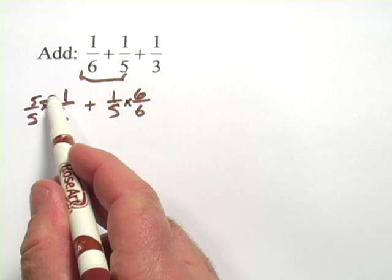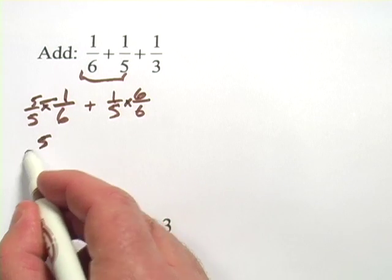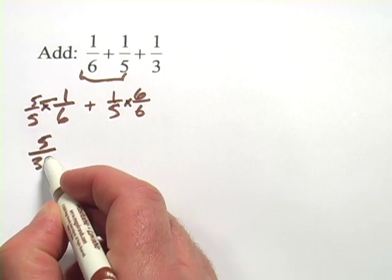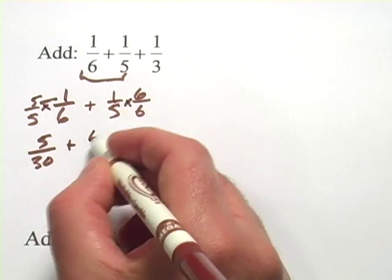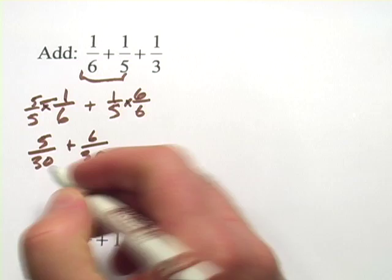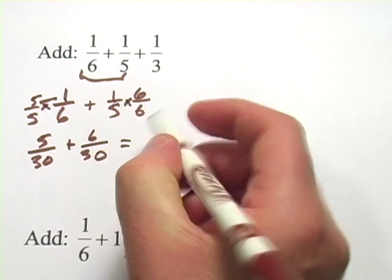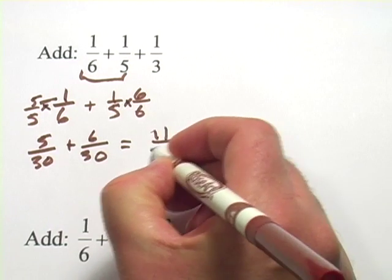Let's do the multiplication. Here I have 5 times 1 on the top and 5 times 6 on the bottom, so that's 5 over 30. And here I have 1 times 6 on the top and 5 times 6 on the bottom, so that's 6 over 30. Adding those together is pretty easy. That's 11 thirtieths.